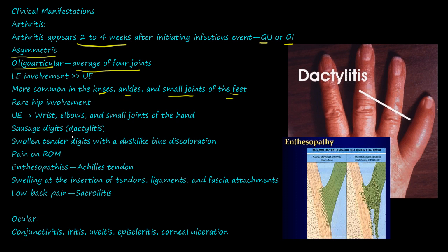Some patients present with dactylitis, or sausage digits. Looking at the picture, you can see normal digits versus dactylitis, which looks like a big sausage. You have swollen, tender digits with a dusky blue discoloration, kind of like Raynaud's phenomenon. There is pain with range of motion — when the patient moves, clenches their fist, or opens it, it hurts.